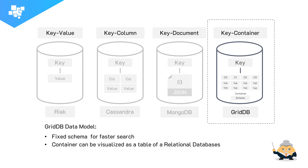The GridDB data model is called the key-container data model, which you can see on the right side of this slide. You have a key describing the data, and the data itself is a container — which is essentially the same as a relational database table. Once inside the container level, it's basically a relational database with a fixed schema, providing benefits like atomicity. When you zoom out, you'll see a collection of keys and containers, similar to other NoSQL databases.